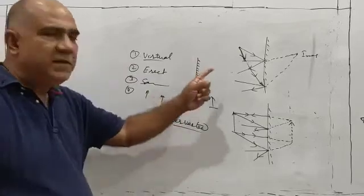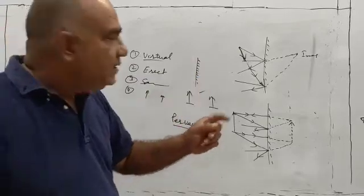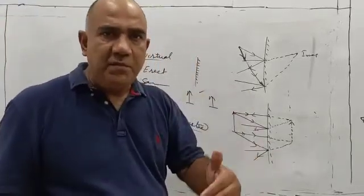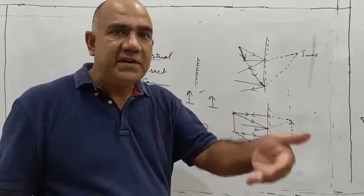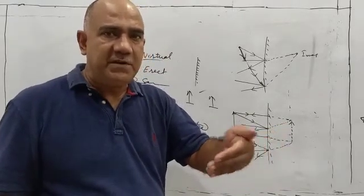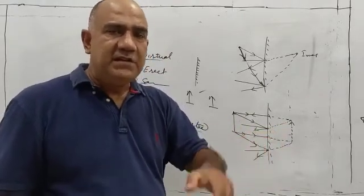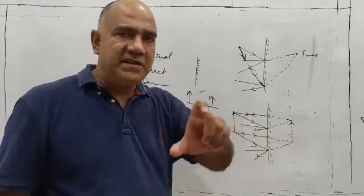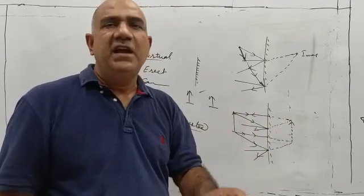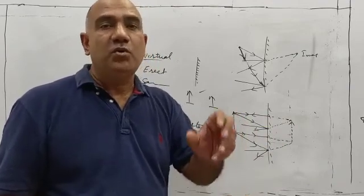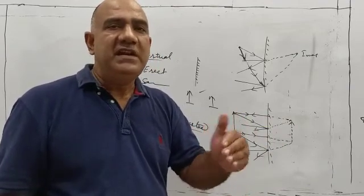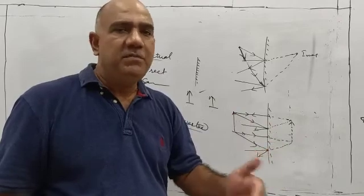To summarize, the characteristics of an image formed by a plane mirror are: the image is virtual, it is erect, it is formed as far behind the mirror as the object is in front of it, the size of the image is exactly the same as the size of the object, and the image is laterally inverted or perverted.